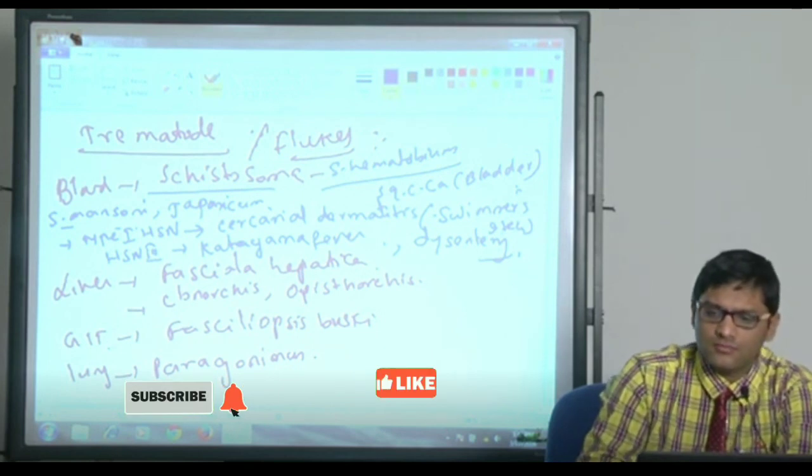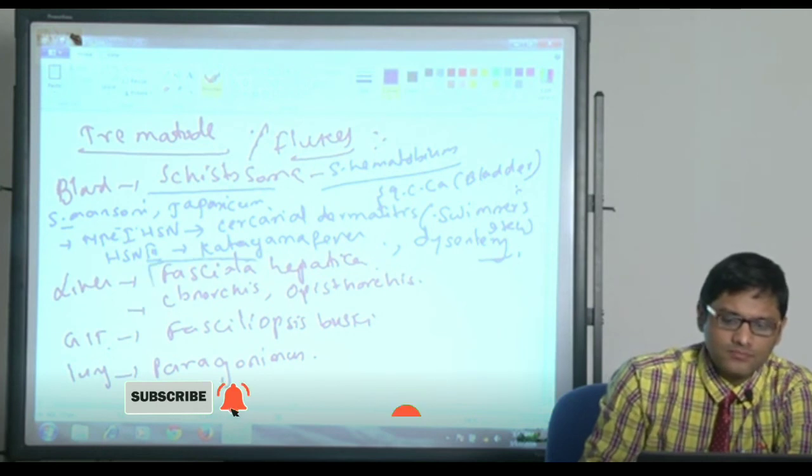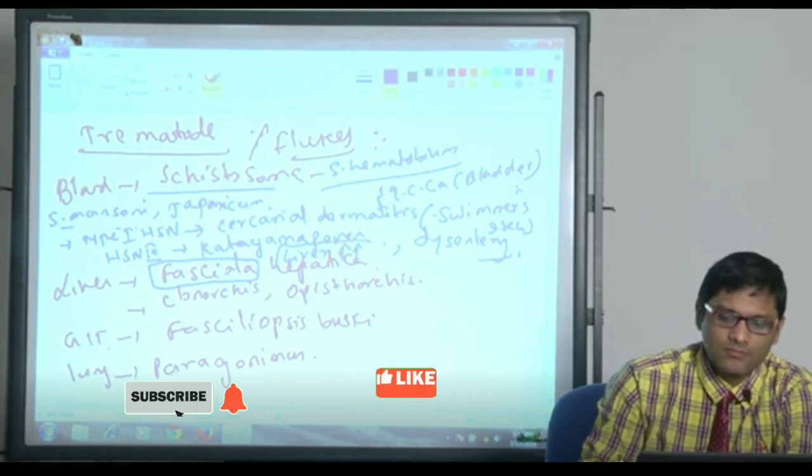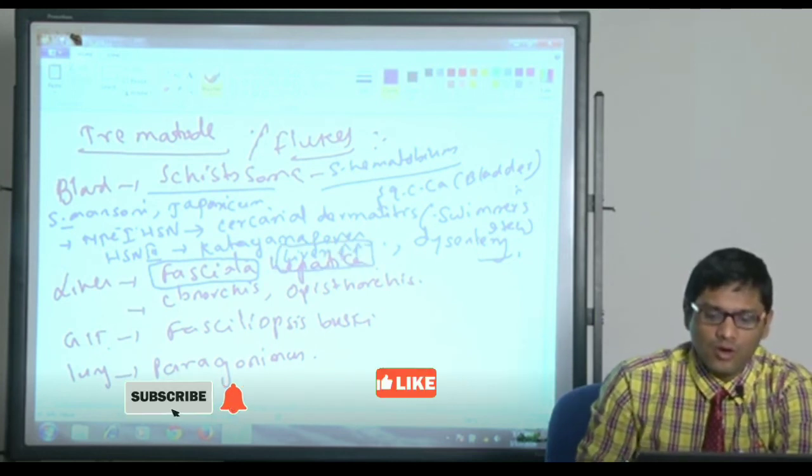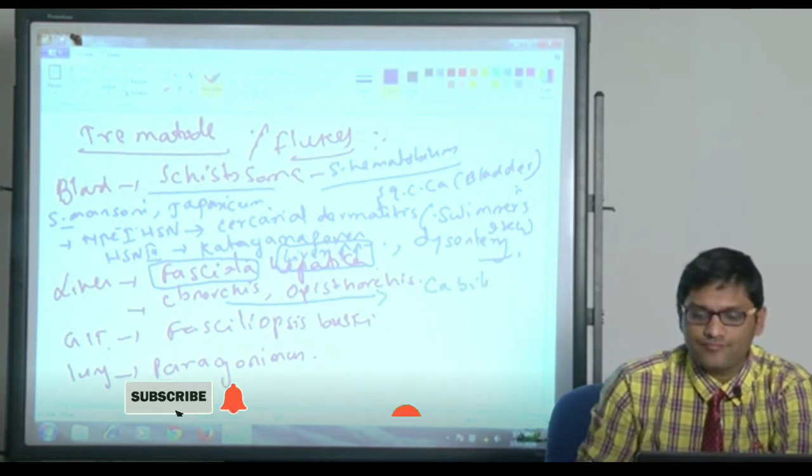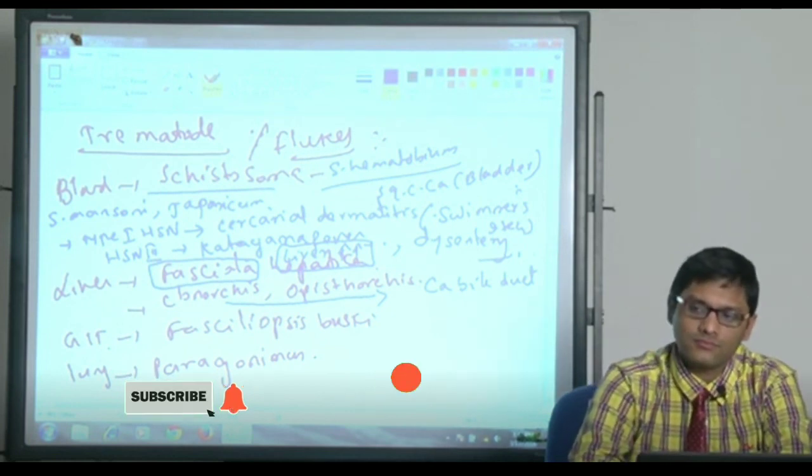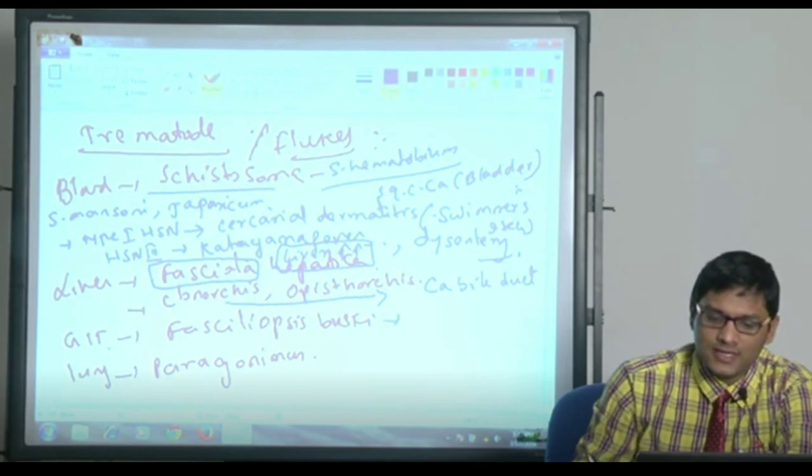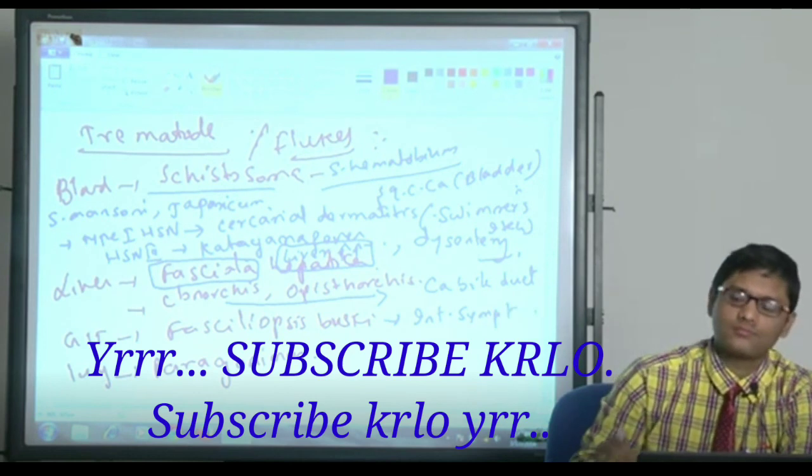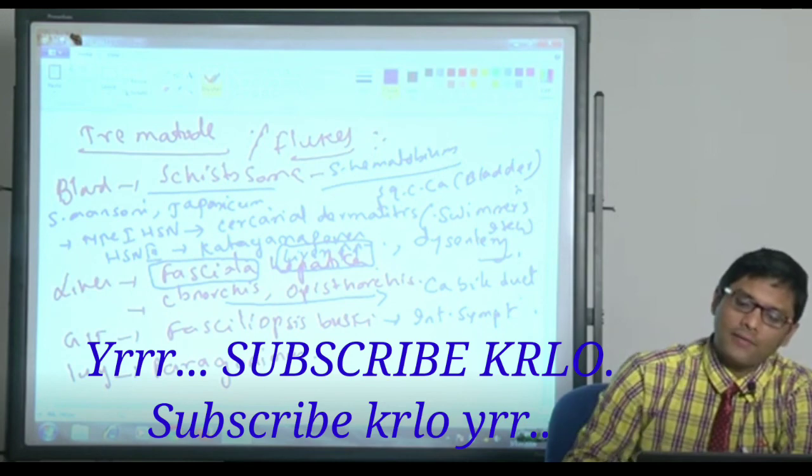Liver fluke, Fasciola hepatica can cause hepatomegaly, liver enlargement. Clonorchis and Opistorchis can cause carcinoma of bile duct. Fasciolopsis buski is a GI fluke, so you will have all sorts of intestinal manifestations and Paragonimus